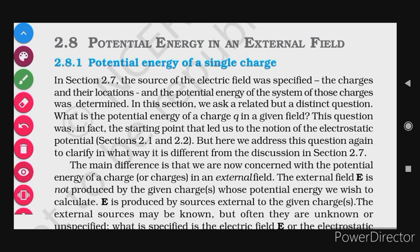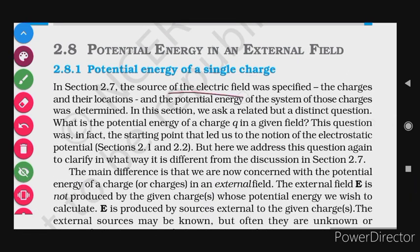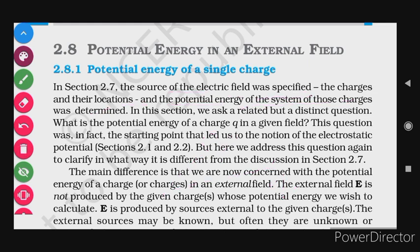In section 2.7, the source of the electric field was specified — the charges and their locations — and we calculated the potential energy of the system of those charges. There were two charges, their position vectors were known from a certain origin, and we calculated the potential energy of the system. Their location was specified, the electric field due to each other was specified, everything was known. In this section we ask a related but distinct question: what is the potential energy of a system of a charge Q in a given field?